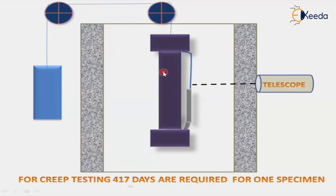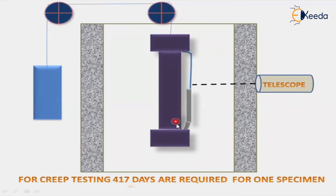For one specimen, a very long duration is required for creep testing. If the specimen is not broken after 17 days or after the particular duration, the conclusion is that the material has a lot of ability — the crack may not enter in an easy manner, and the life expectancy of the material is more. All these conclusions can be drawn after the creep testing is completed.